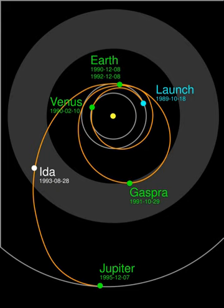GMM conducted additional investigations of Europa, including a magnetic field measurement key to detecting the presence of liquid water. GMM also added to our knowledge of Io, studied the dynamics of Ganymede's unique magnetosphere, determined particle sizes in Jupiter's rings, and performed a joint investigation with the Cassini spacecraft, whose closest approach to Jupiter was on 30 December 2000. Some of Galileo's instruments were not operating at full performance during GMM because exposure to Jupiter's intense radiation belts had damaged them.